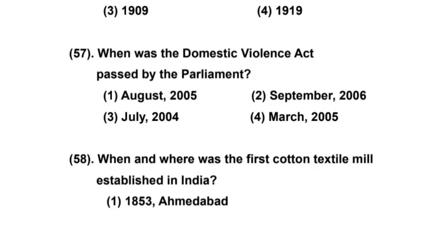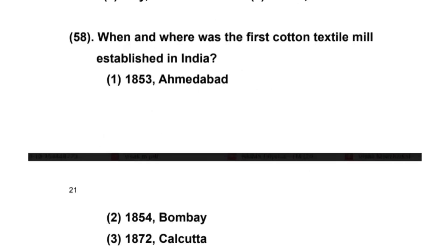The next question: When was the Domestic Violence Act passed by the Parliament? The options are: 1) August 2005, 2) September 2006, 3) July 2004, 4) March 2005. The right answer is option 1 — August 2005.